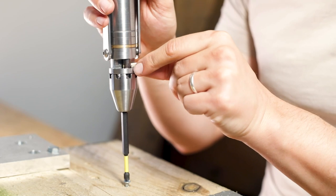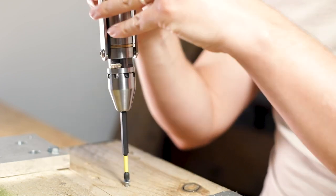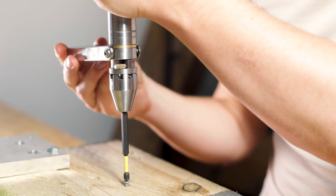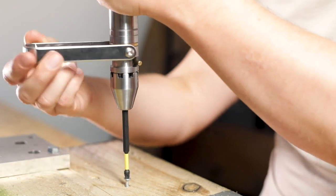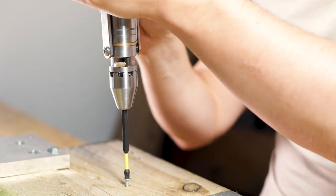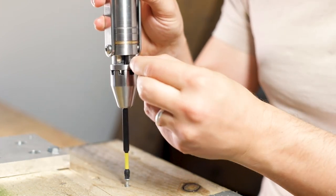This little catch here lets you easily change the direction of the ratchet to put in or take screws out. It can also lock out to be used without the ratchet altogether.